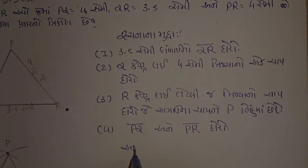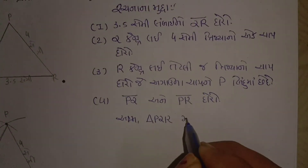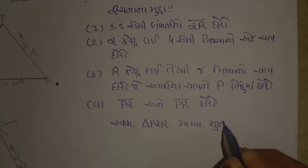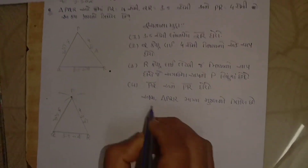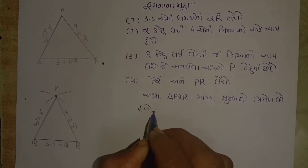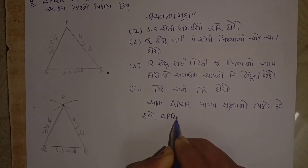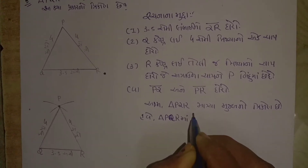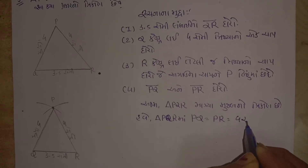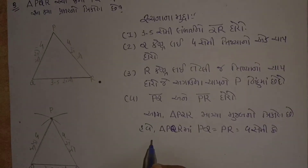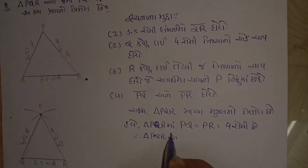આમ ત્રિકોણ PQR માગ્યા મુજબનો ત્રિકોણ છે. હવે આ પ્રશ્નના ઉત્તર આપીએ: ત્રિકોણ PQR માં PQ = PR = 4 સેમી છે, તેથી ત્રિકોણ PQR એ સમદ્વિ બાજુ ત્રિકોણ છે.